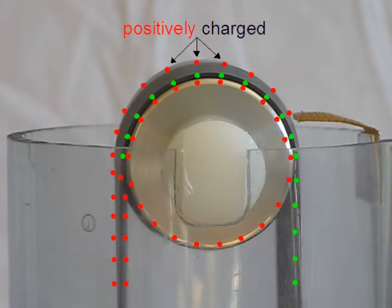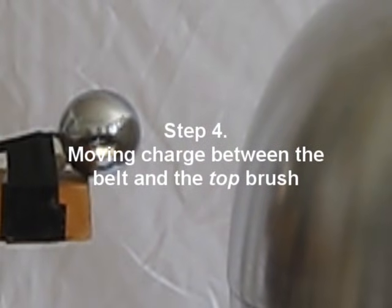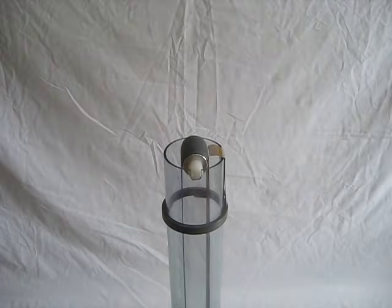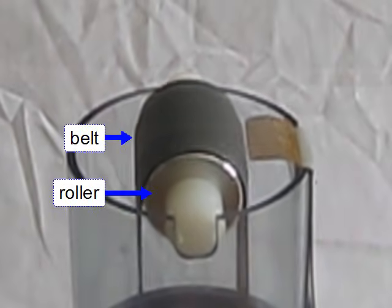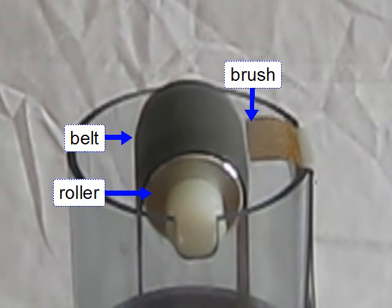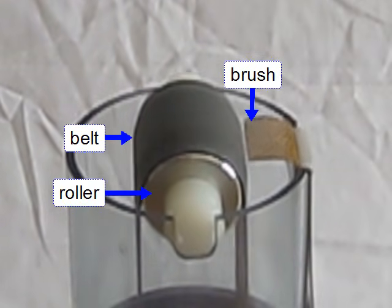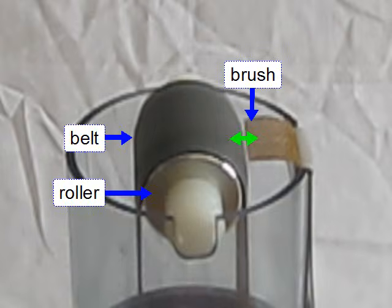Keep in mind that we've been talking about the roller's interaction with the inner surface of the belt. Up to this brush, the outer surface is still positive. Now let's see how the top brush is involved. Step 4 is to use the now-charged outer surface of the belt to move charge between the belt and the top brush — a similar thing to what happened at the bottom in step 2 will also happen here.